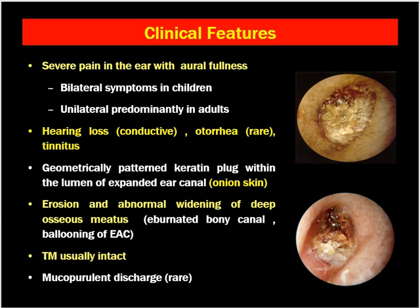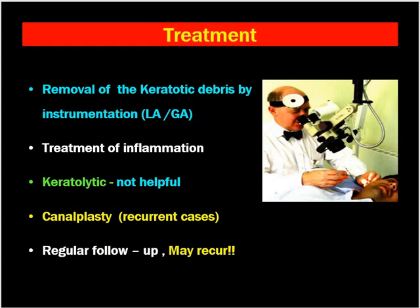The tympanic membrane is usually intact, and the patient may rarely have mucopurulent discharge. Patient usually presents with watery discharge if present, but there will be excruciating pain in the ear. Investigation is usually not required, because with otoscopy we can diagnose the condition. When there is onion skin appearance, severe pain, and tight epithelial debris on examination, we have to think of keratosis obturans — the term itself means blocked keratin debris.